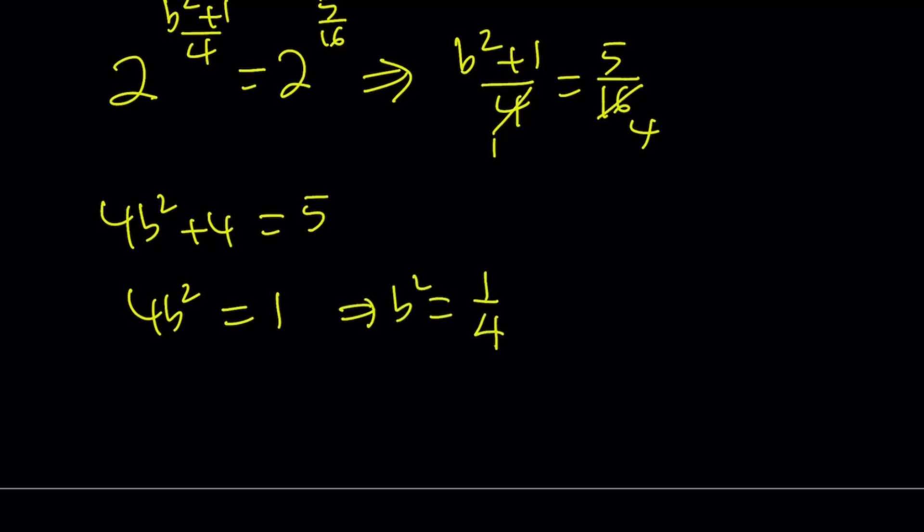And from here, we get b squared equals 1 fourth. Of course, this has two results, and we're going to check those. b is either 1 half or negative 1 half. We're going to check to make sure that these are valid exponents.